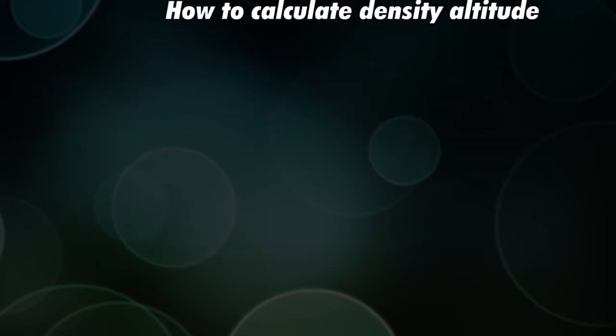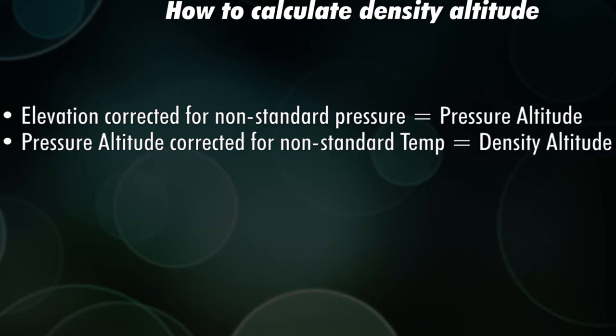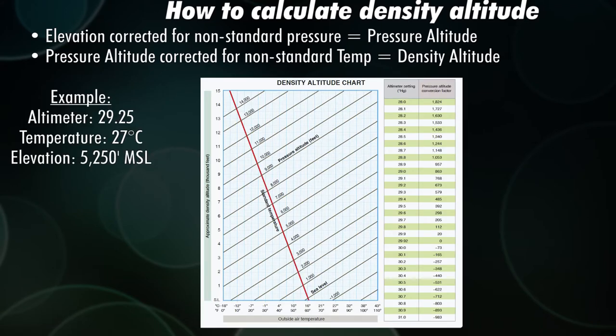Now then, how do we find this pesky density altitude? We take our elevation, we correct that for non-standard pressure, that'll give us our pressure altitude. We take the pressure altitude, correct it for non-standard temperature, and you get density altitude. And believe it or not, there's a chart for that. Here's an example we'll work through. We'll say our altimeter is 29.25, 27 degrees Celsius, and the elevation is 5,250.